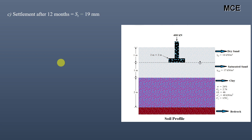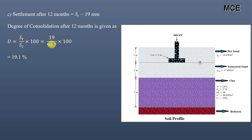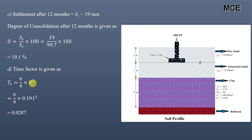To find the degree of consolidation after 12 months, with settlement = 19 mm: U = (St / Sc) × 100 = (19 / 99.7) × 100 = 19.1%. The time factor Tv = (π/4) × U² = (π/4) × 0.191² = 0.0287.